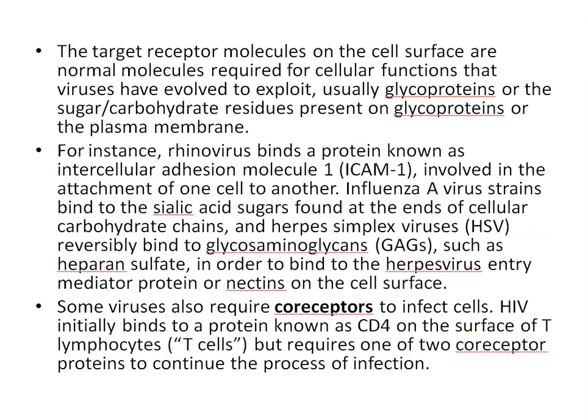The target receptor molecules on the cell surface are otherwise normal molecules that are required for cellular functions. Viruses have evolved to exploit them, usually glycoproteins. For example, rhinovirus binds a protein known as intercellular adhesion molecule 1, ICAM-1, which is involved in attachment of one cell to another.